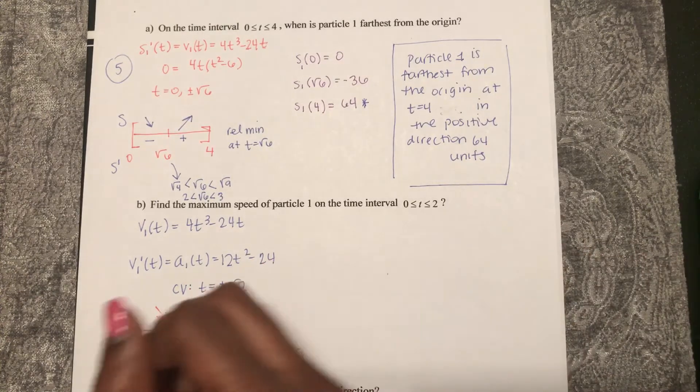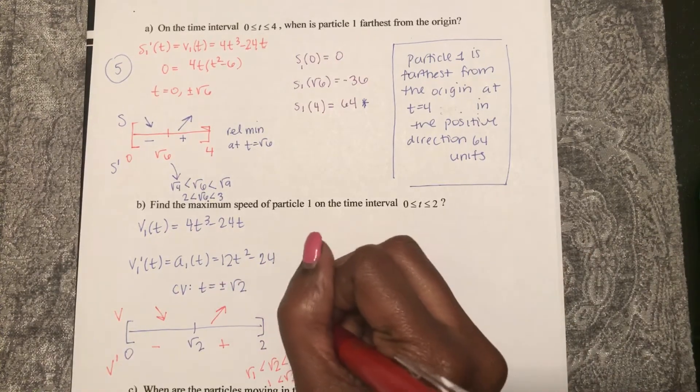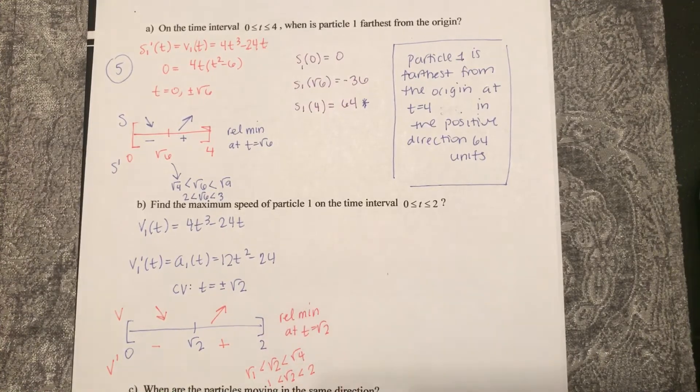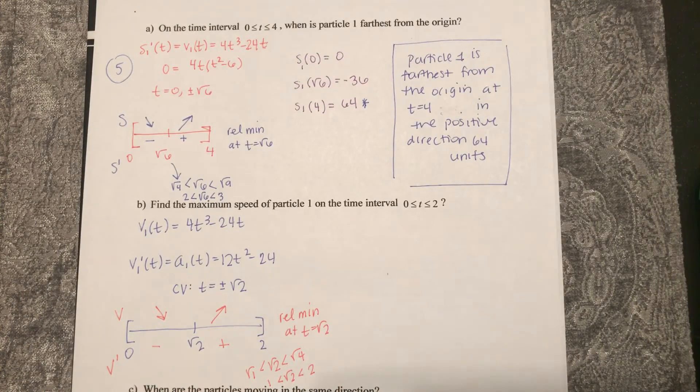So we see there is a relative min at t equals square root two. But we're looking on a closed interval here, so we need to check our velocity at all these times.